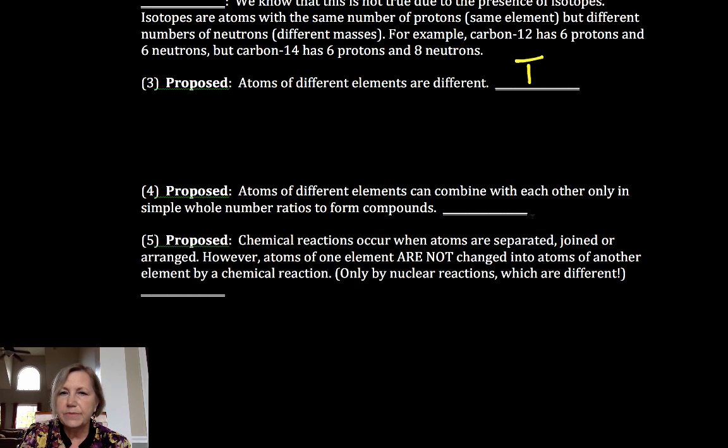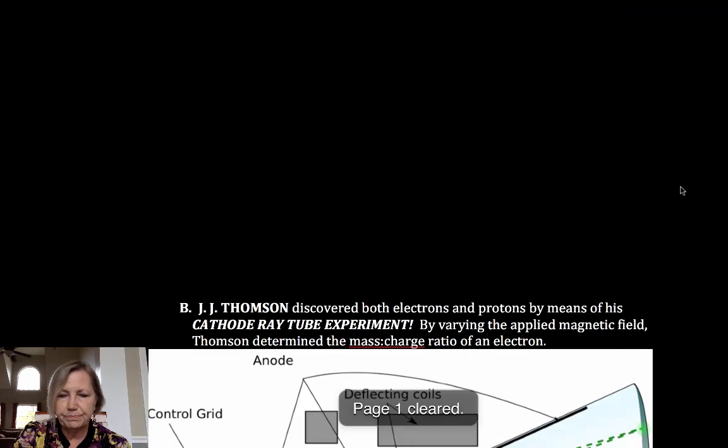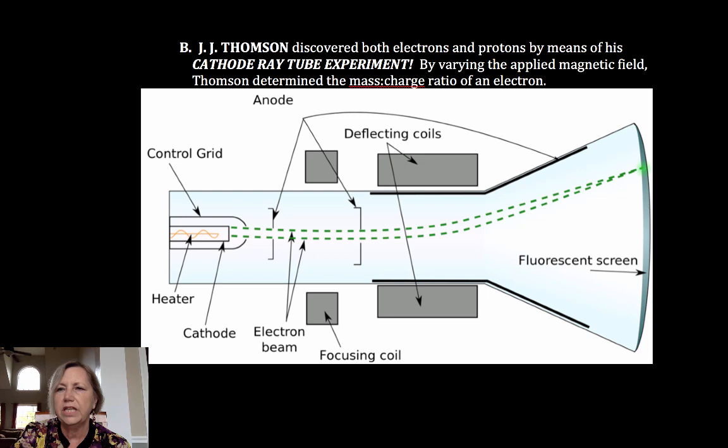He proposed atoms of different elements can combine in simple whole number ratios. That's true. We have CO2, H2O, very simple whole number ratios. We don't have H1O. He proposed chemical reactions occur when atoms are separated, joined, or rearranged. However, atoms of one element are not changed. And that's true. Atoms are changed only by nuclear reactions, not by chemical reactions. So he got some good stuff right. And the key is not to focus on what was false, but how the things that were false and the things that were true spurred on the next level of growth and understanding about the atom.